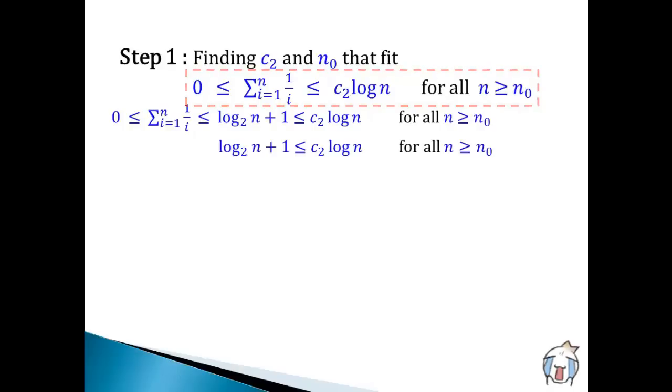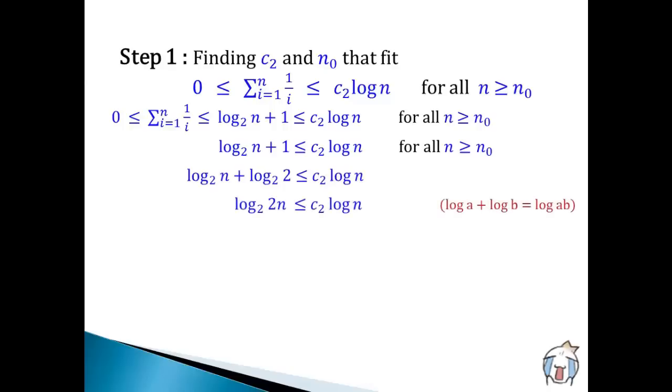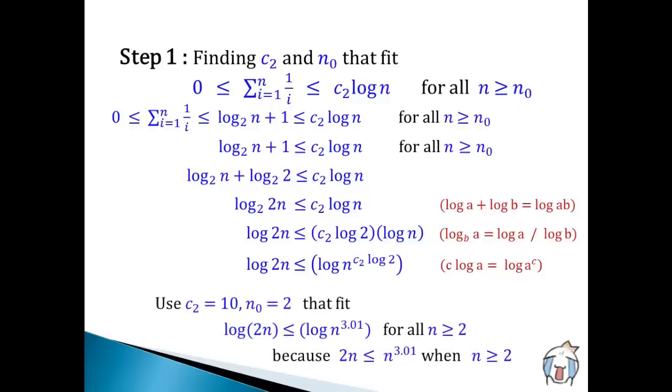We start by changing 1 to log 2 base 2. Sum log n base 2 and log 2 base 2 together. Multiply both sides by log 2. Then apply the power rule. There are many c2 and n0 that fit this inequality. Today, we choose 10 for c2 and 2 for n0. Now we have already shown that log n is an upper bound of the sum of the first n terms of harmonic series. This is the end of step 1.